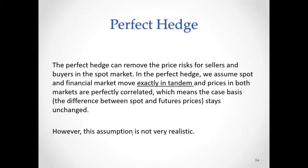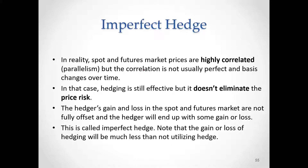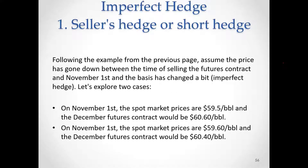The imperfect hedge is the more realistic case. Same examples but different prices and different scenarios. The structure of the imperfect hedge is very similar to the perfect hedge. The only difference is that the change in prices in the financial and futures markets are not going to be exactly the same. We are going to have eight examples: four for the short hedger and four for the long hedger.